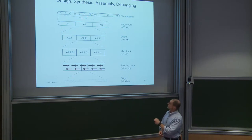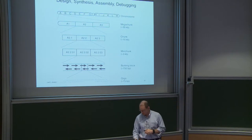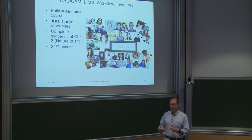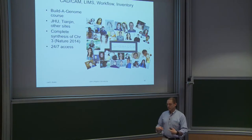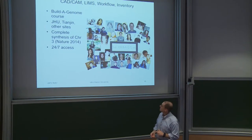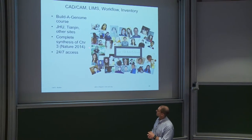On the computer we take the sequence and break it down to smaller and smaller pieces. Eventually they get ordered, we receive them. At Johns Hopkins for a while we had a factory running with undergraduate labor, taking oligos received from IDT and doing PCR reactions to build them up to 600-mer pieces, then building them up in succeeding stages of assembly. These undergrads completed the synthesis of chromosome three, published in 2014.